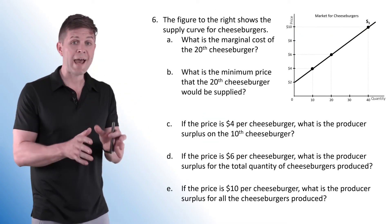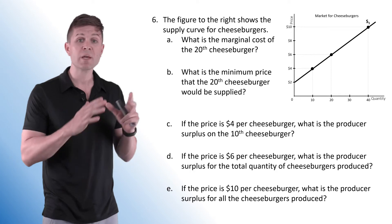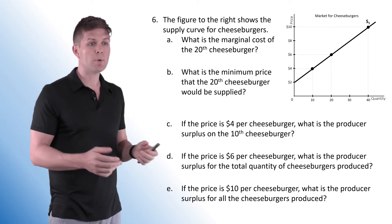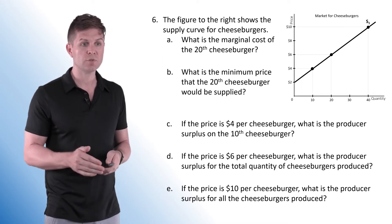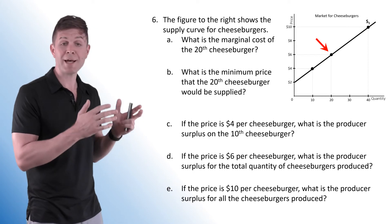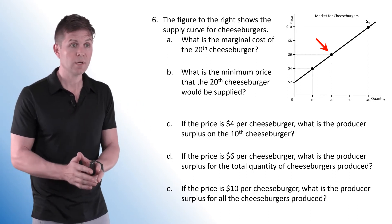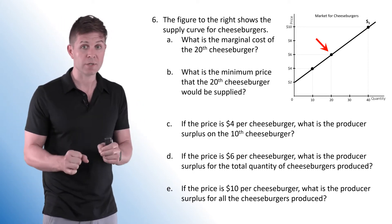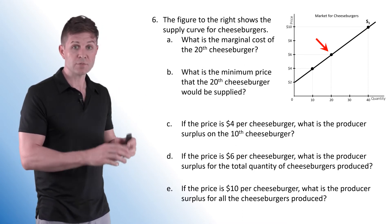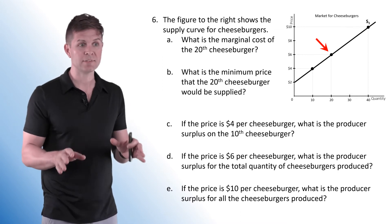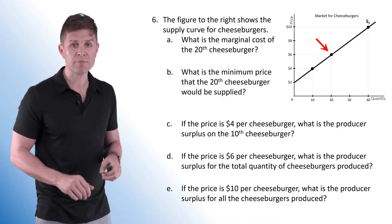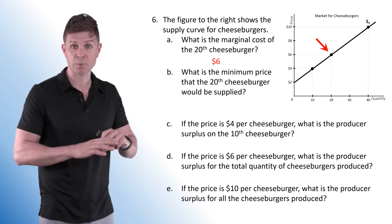Number 6 looks at producer surplus. We're in the market for cheeseburgers, but now we have an upward sloping supply curve. First question: what is the marginal cost of the 20th cheeseburger? The quantity supplied at $6 is 20. The marginal seller comes into the market just as the price gets up to $6, and his marginal cost is exactly $6 at this point. If it goes any lower, he will leave the market. So the marginal cost of the 20th cheeseburger is $6.